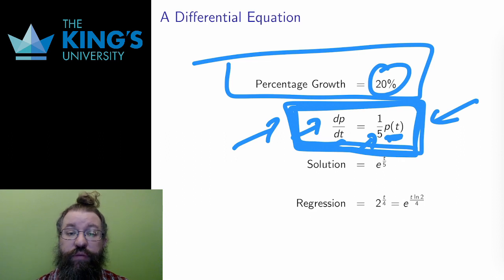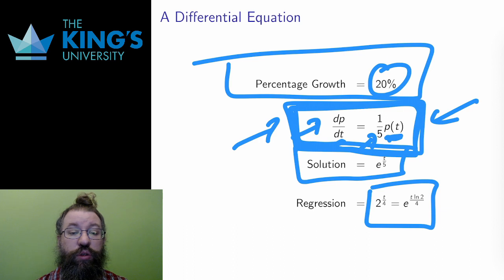The answer is the function e to the t over 5, an exponential function. This is not quite the same as the regression I used in the previous video, which was 2 to the t over 4, or e to the t times ln 2 over 4, but it is very close, certainly close enough to make the point.